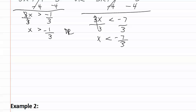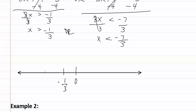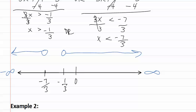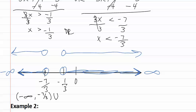Now we must graph this. We put zero, negative one-third, and negative seven-thirds on the graph, then graph each piece. Greater than negative one-third is an open circle going towards positive infinity. Less than negative seven-thirds is an open circle going towards negative infinity. We place both on the graph because in an or statement we show all possibilities. Then we write our interval notation: parenthesis, negative infinity, comma, negative seven-thirds, parenthesis, union, parenthesis, negative one-third, comma, positive infinity. This is our answer.